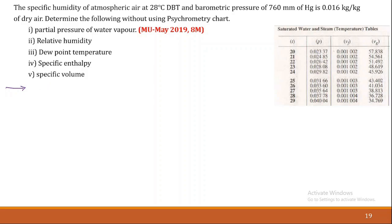Hello everyone, we are solving numericals on psychrometry. This is our second numerical. Read the problem carefully: the specific humidity of atmospheric air at 28 degree Celsius dry bulb temperature and barometric pressure of 760 mm of mercury is 0.016 kg per kg of dry air. Determine the following without using the psychrometry chart — we have to use the steam table to solve this problem.